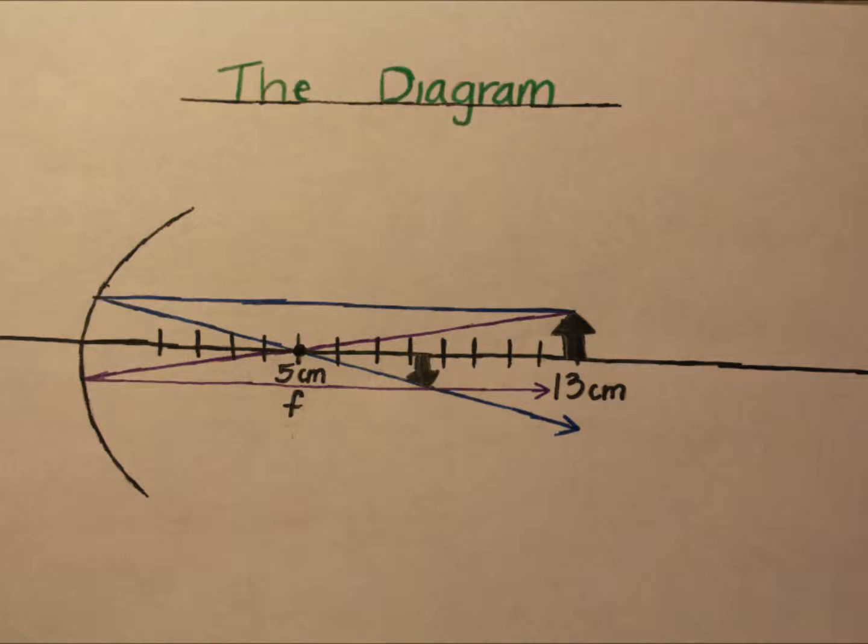Draw a line parallel to the principal axis from the arrow, then reflect through the focal point. Then draw another from the arrow through the focal point, then reflect off the mirror parallel to the principal axis.